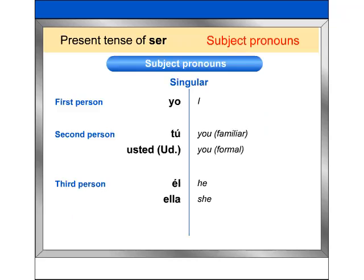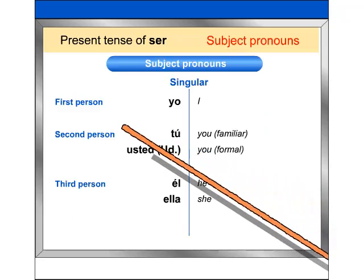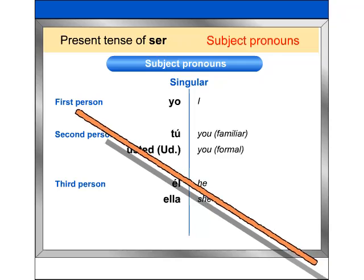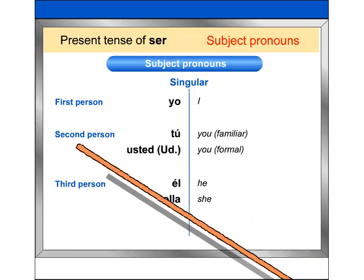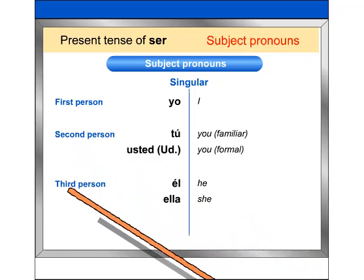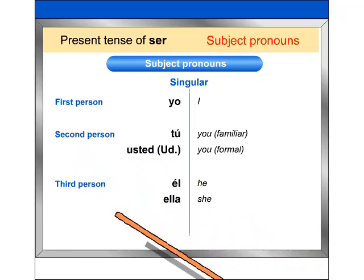In both Spanish and English, subject pronouns are divided into first, second, and third person. Each group has both singular and plural forms.